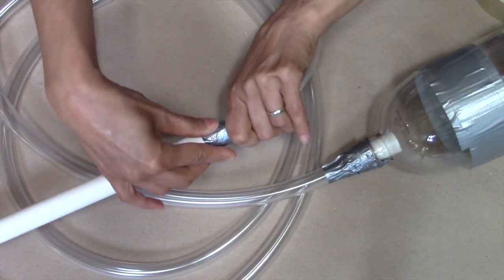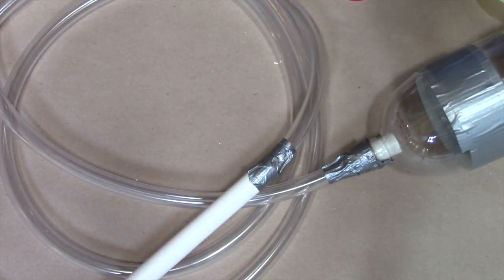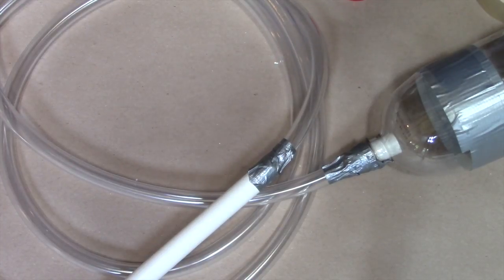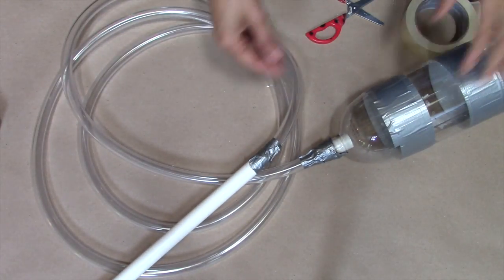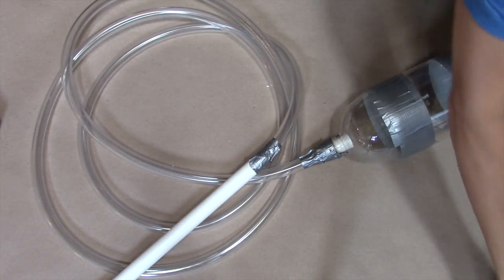I've seen plans that use other flexible tubes like sections of water hose and tire inner tubes, so if you happen to have something like that laying around you can give one of those a shot instead.